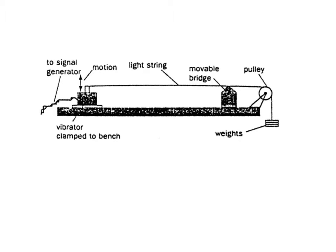The first example of stationary waves generated using this method is using a stretched string. You'll notice an oscillator connected to a signal generator. As you adjust the signal generator, you can adjust the amplitude — how high it will vibrate — and also the frequency, which is how fast it vibrates. So we fix a certain amplitude and adjust the frequency slowly from low to higher. As this oscillates, the string is tied to a weight over a pulley.